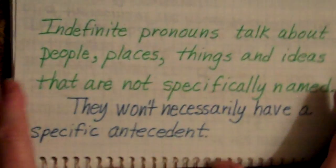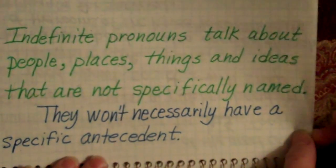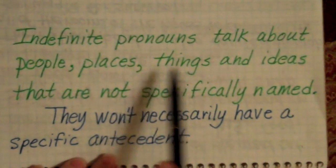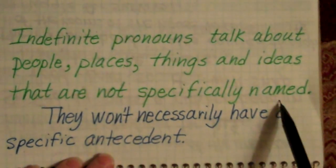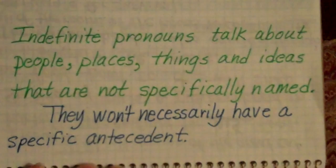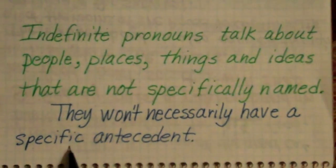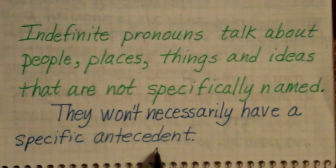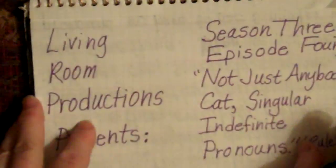Okay, first I need to tell you what indefinite pronouns are. Indefinite pronouns talk about people, places, things, and ideas that are not specifically named — got that definition out of the book. But what it means is, they won't necessarily have a specific antecedent. Not a specific antecedent. I think you'll get that as we go along here.